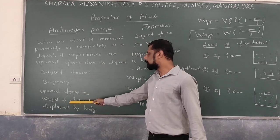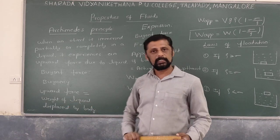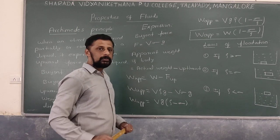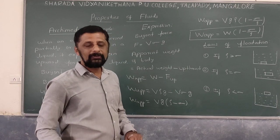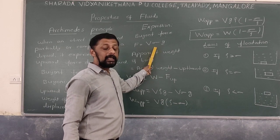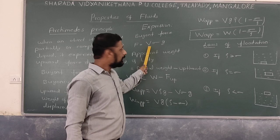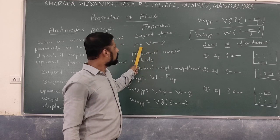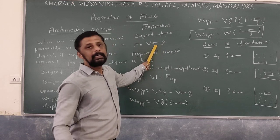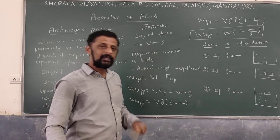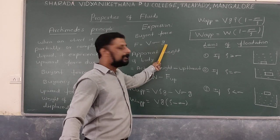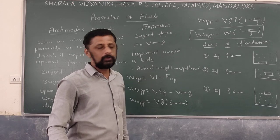The expression for buoyant force: if an object is immersed in a liquid of density σ and it displaces liquid of volume V, then buoyant force F = V × σ × G, where σ is the density of the liquid, V is the volume displaced by the object, and G is the acceleration due to gravity.